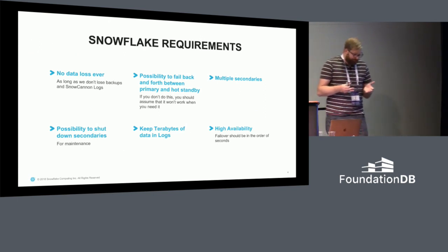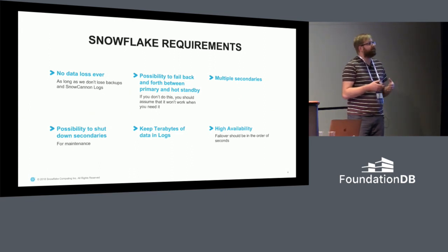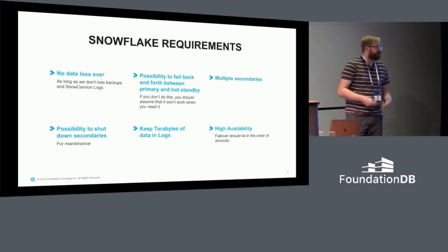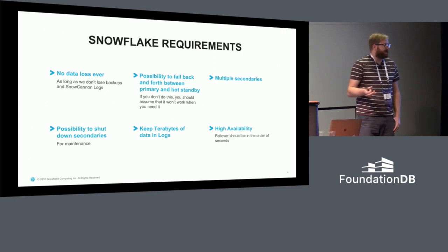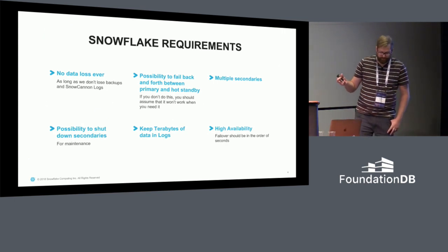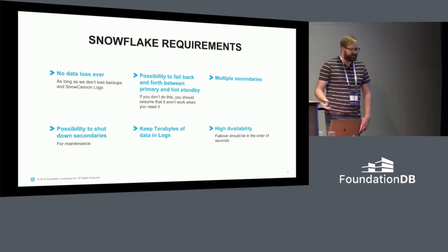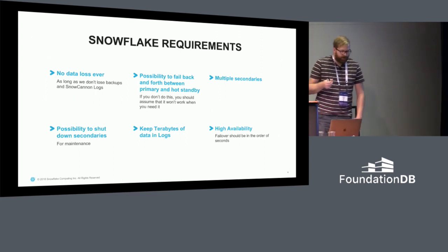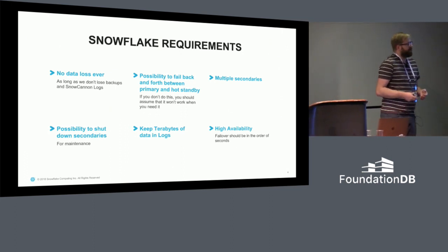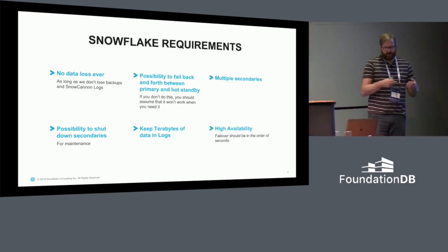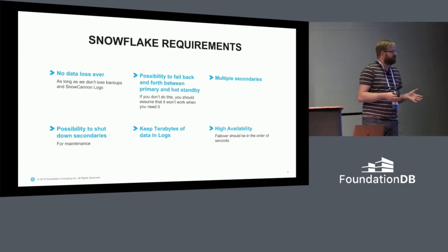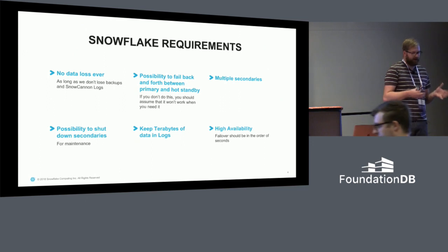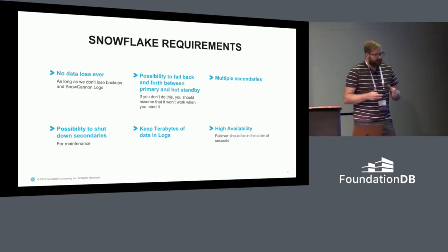We want the ability to fail back as well. Usually when you lose an FDB cluster, you don't lose it completely — its performance degrades due to networking issues or losing machines. If we can fail over to a secondary without throwing away the old primary, we can fix the old primary and have a runnable secondary again, basically for free. We also want multiple secondaries — we are that paranoid — and the ability to shut down secondaries for software upgrades or moving to other machines. We also want terabytes of mutations and changes to our FDB storage safely stored on disk.